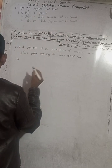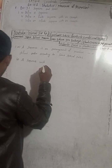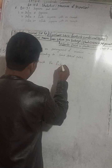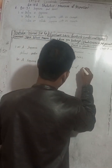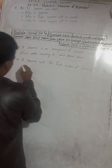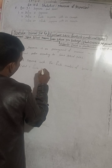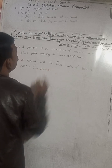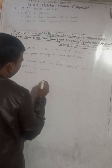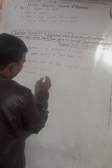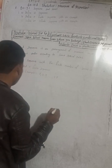Define a finite sequence with an example. So a sequence with a finite number of terms is called a finite sequence. For example, I can write: 1, 2, 3, ... 13. That means it ends at thirteen, so this is a finite sequence because it ends at thirteen.